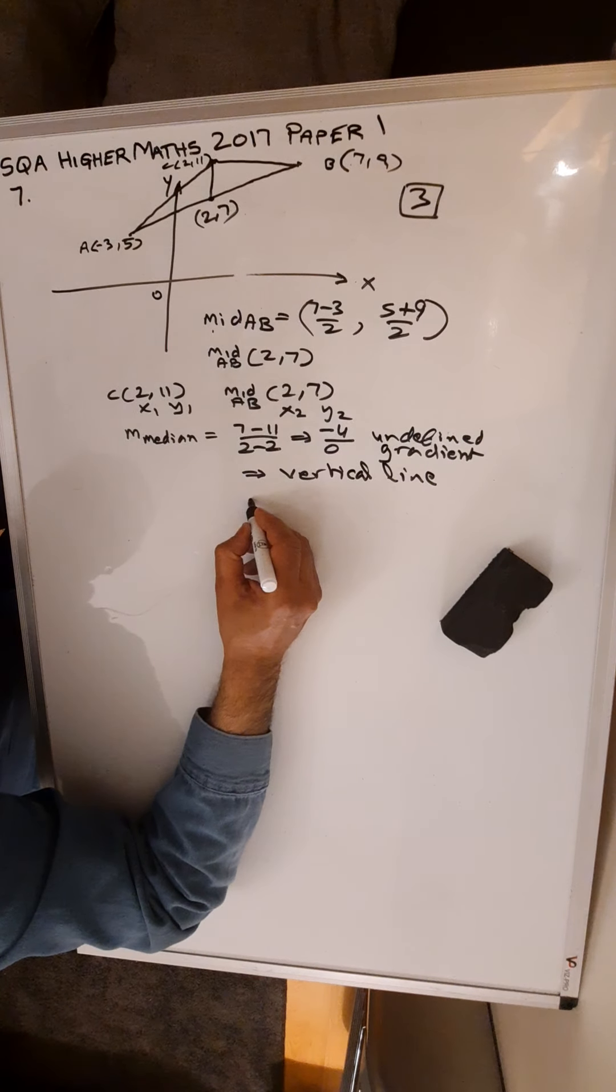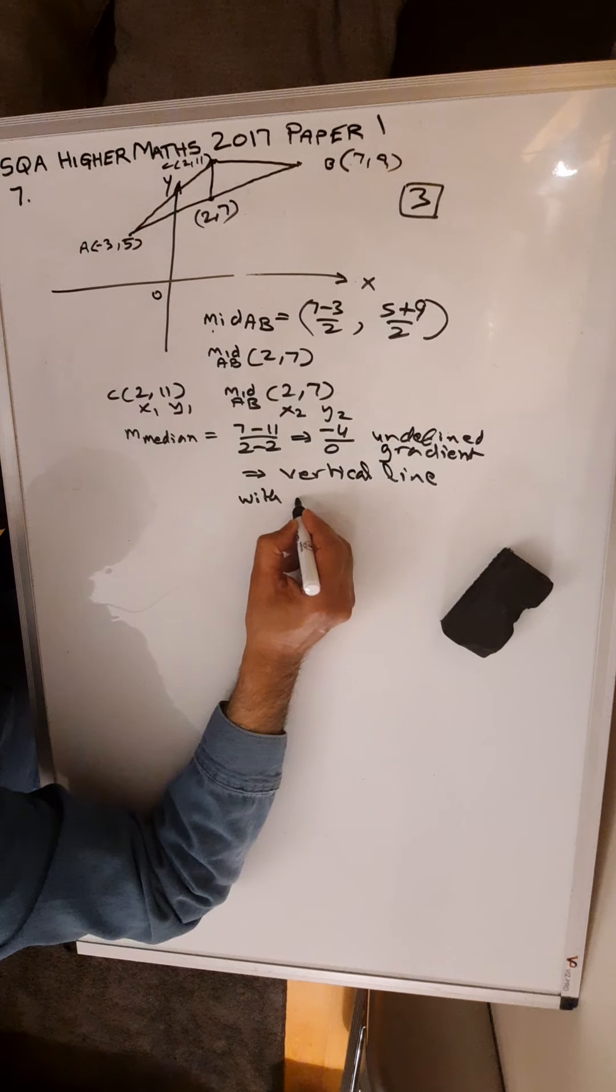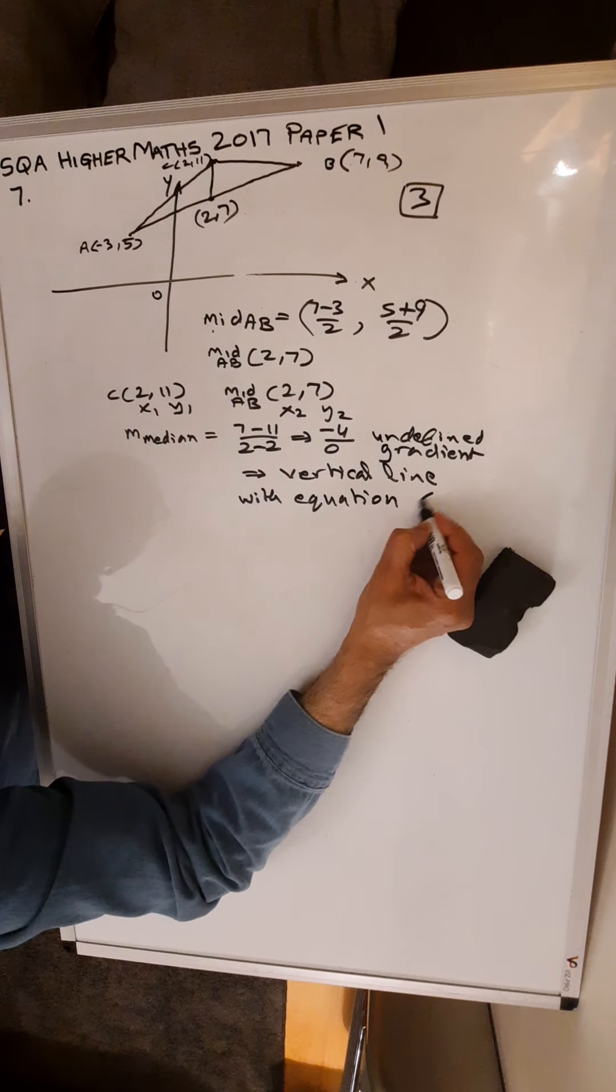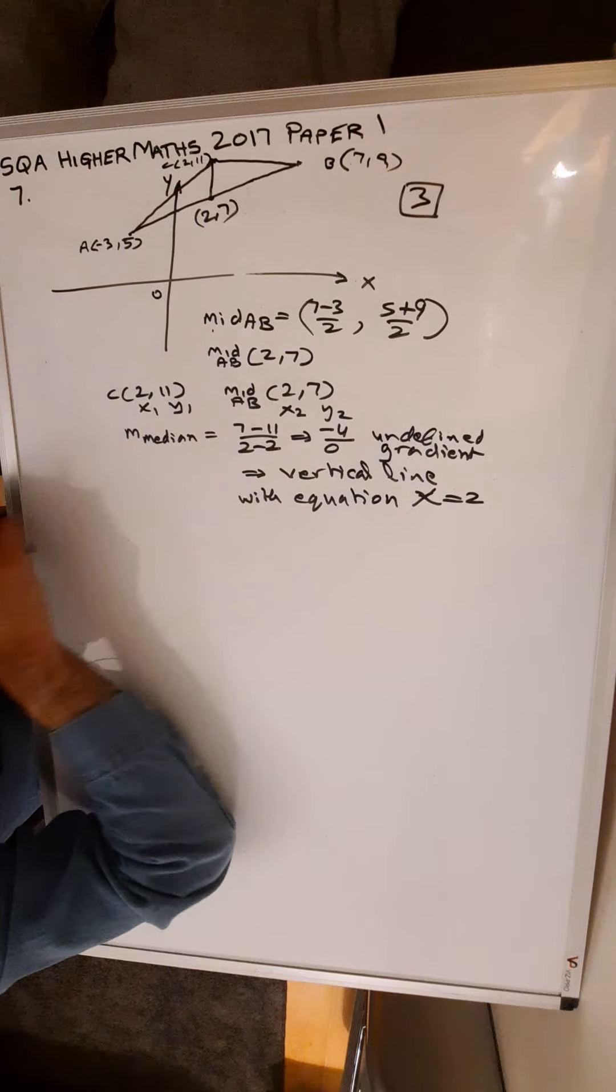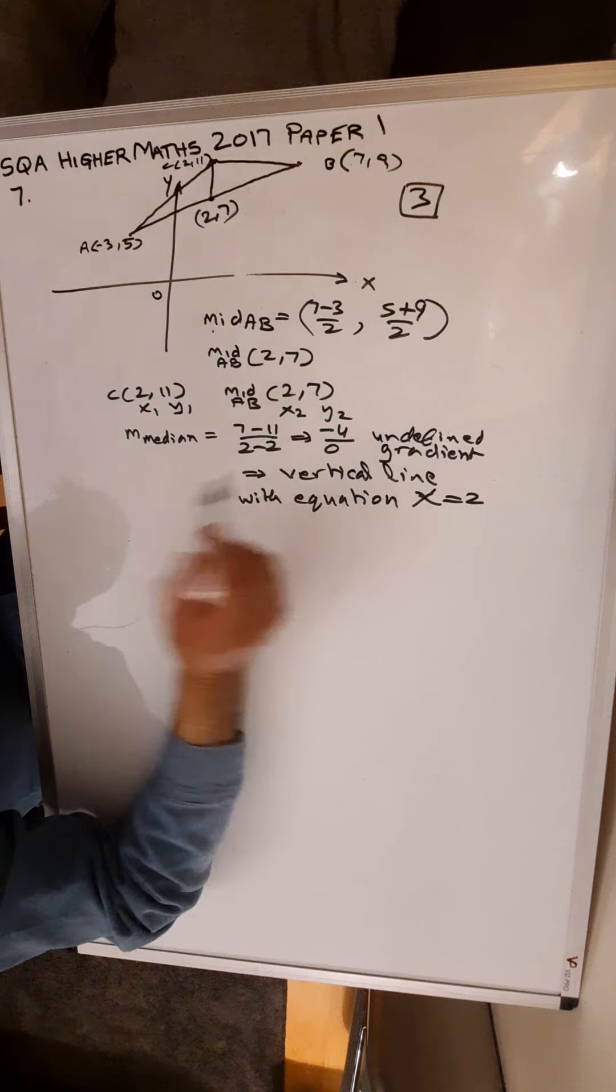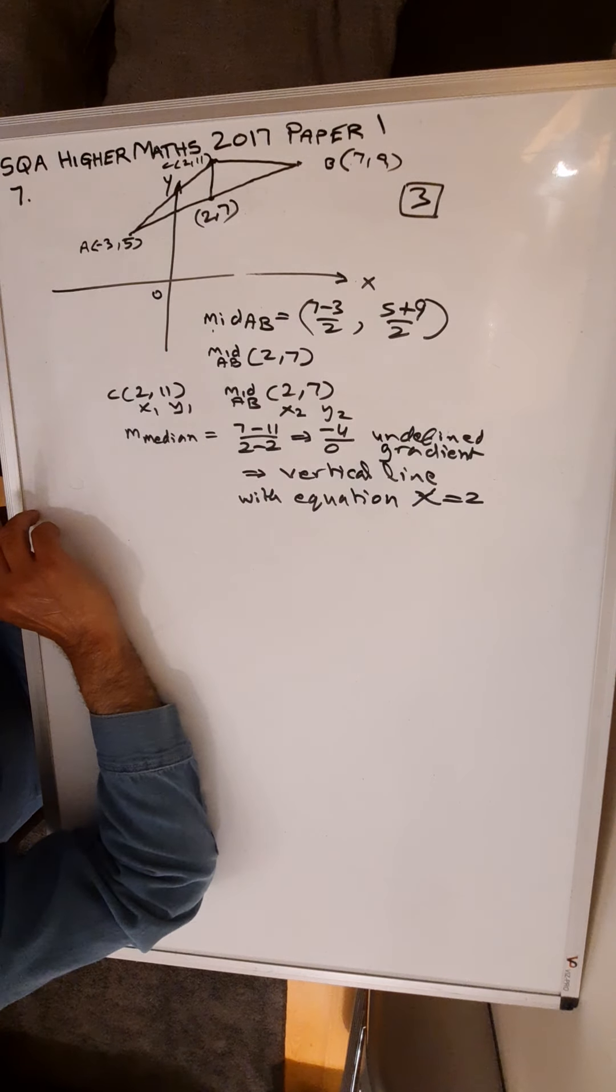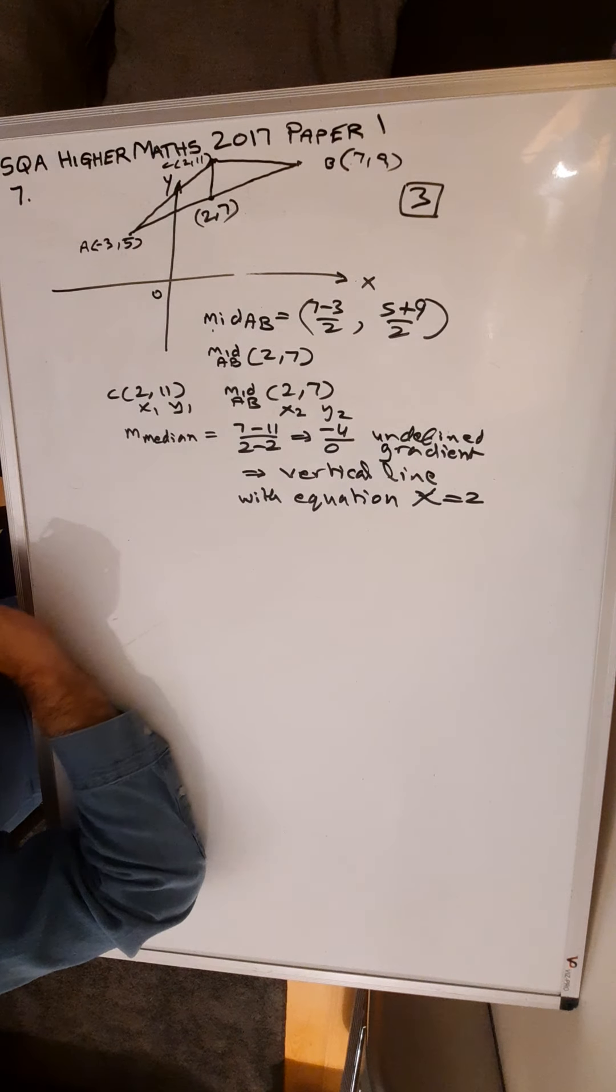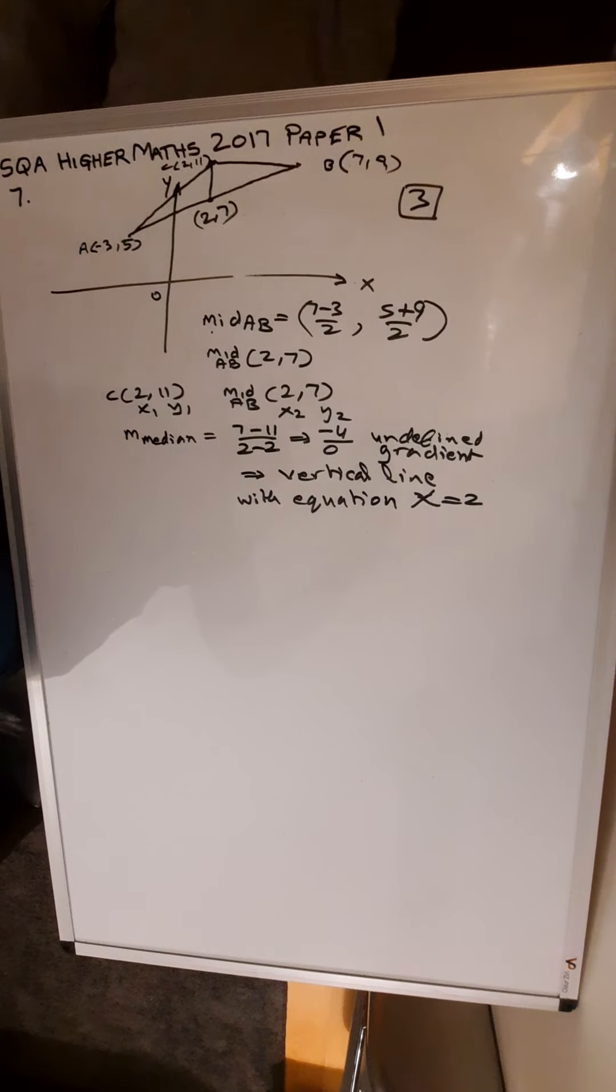And the equation of the median x equals 2. If you did it the other way, you'd end up with plus 4 over 0, which is still undefined. So you're ending up with a vertical line with equation x equals 2. That is the equation of the median from C.